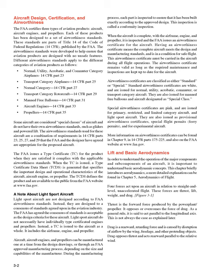Airworthiness certificates are classified as either standard or special. Standard airworthiness certificates are white and are issued for normal, utility, acrobatic, commuter, or transport category aircraft. They are also issued for manned free balloons and aircraft designated as special class.